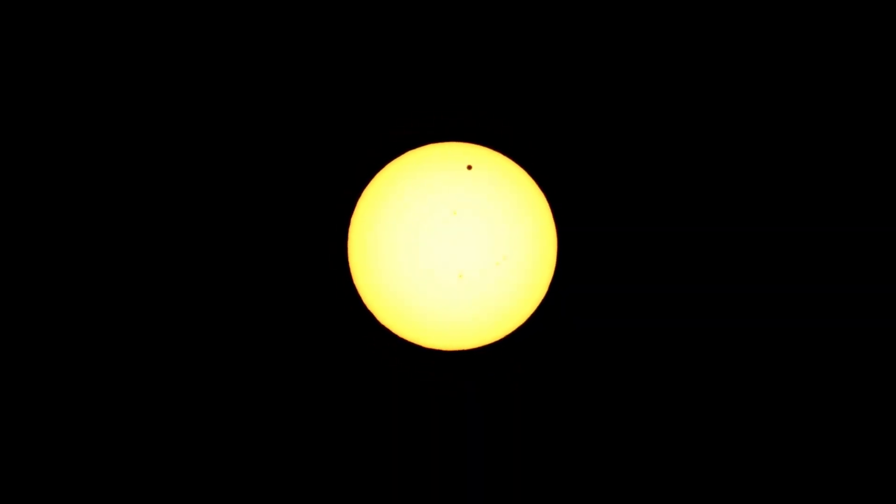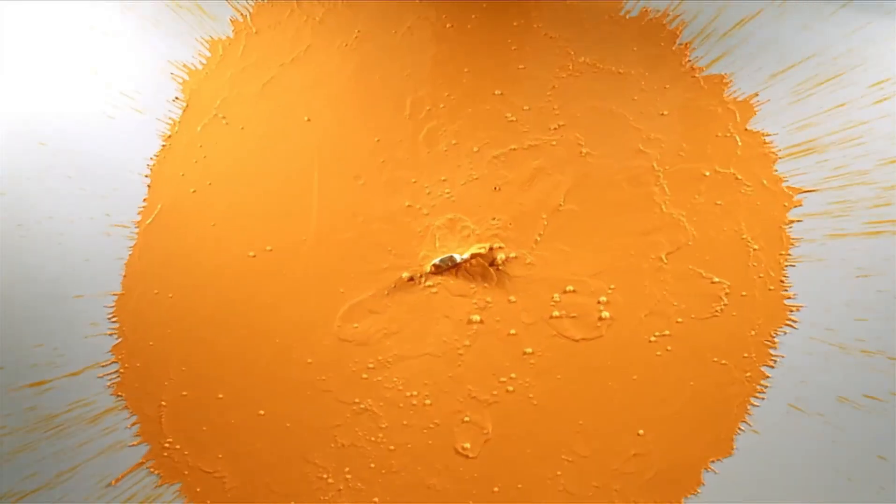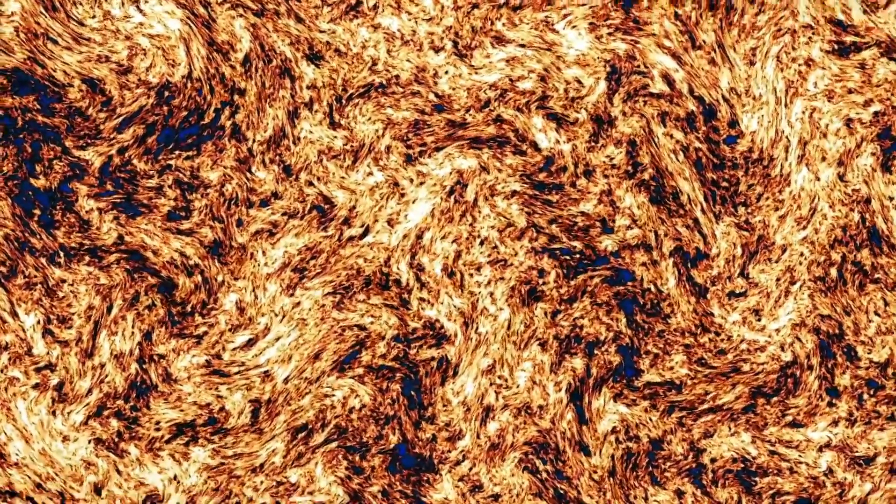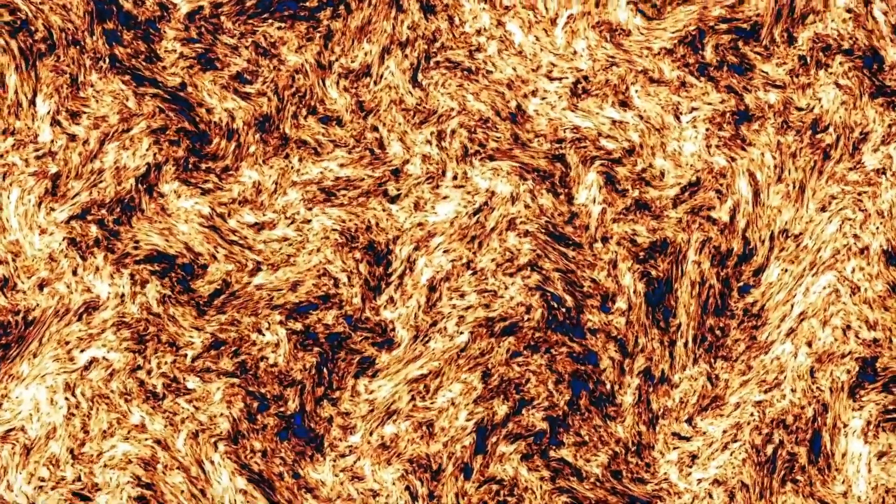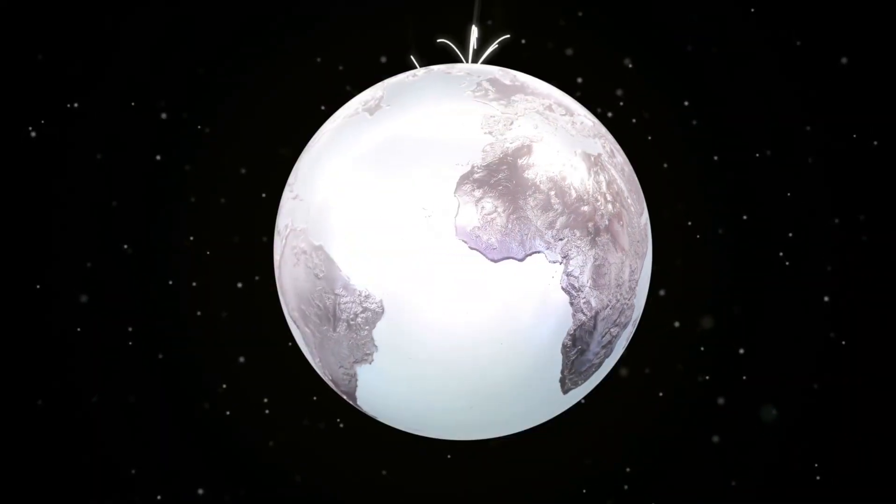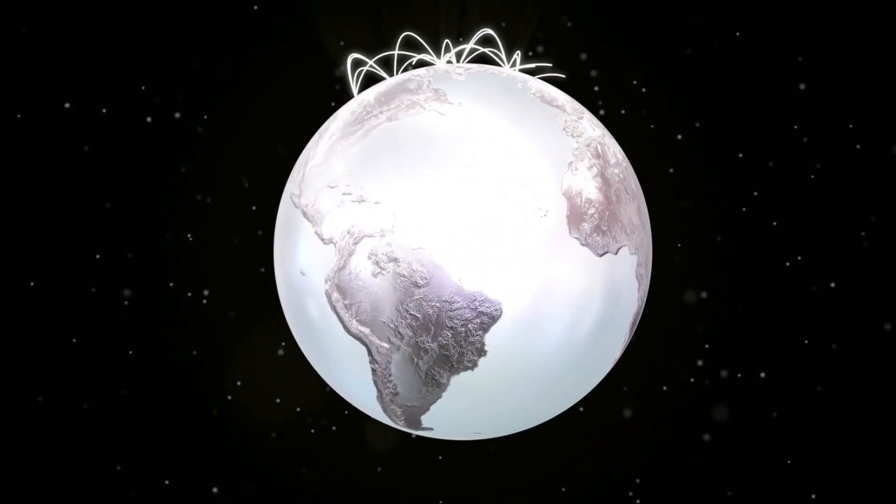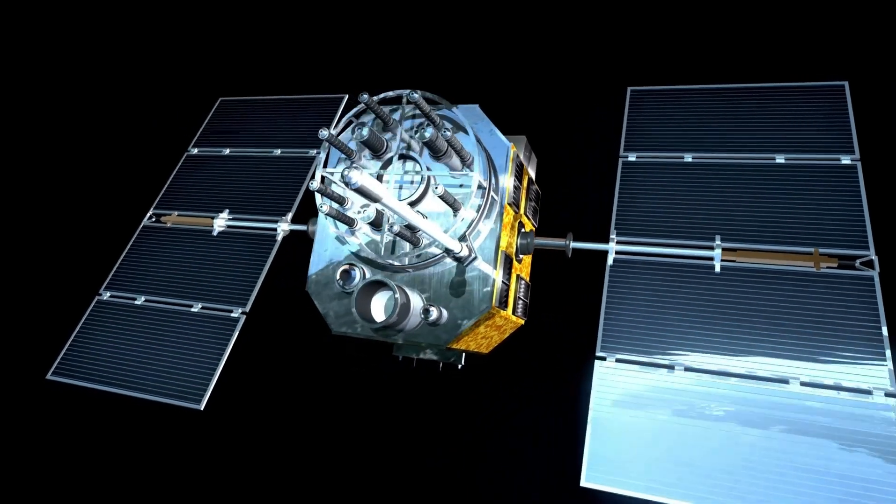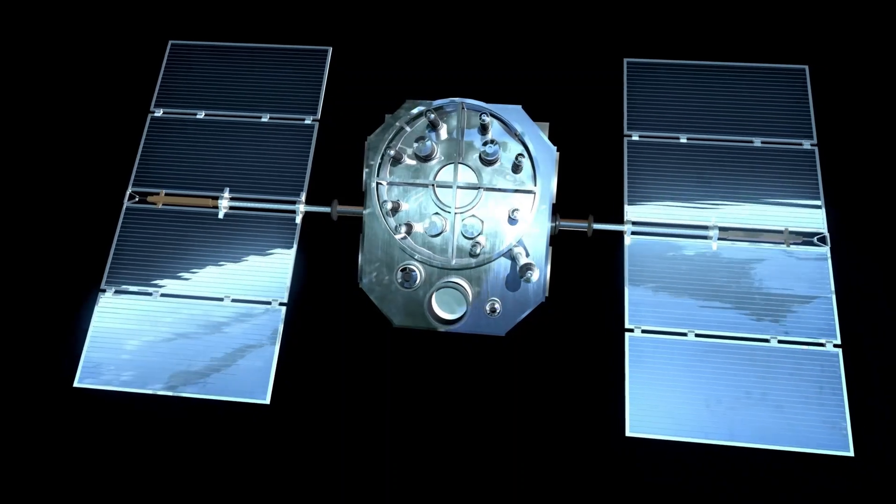The information provided by these spacecraft has deepened our understanding of the cosmos, revealing unexpected and sometimes baffling phenomena. The Sun, despite appearing as a tranquil sphere of light, is actually a dynamic nuclear engine hurtling through the Milky Way at an astonishing speed of 450,000 miles per hour. It is surrounded by an intricate web of tangled magnetic fields that continuously interact with the interstellar medium. As the Sun moves through the galaxy, it emits a constant stream of charged particles known as the solar wind, which does not simply dissipate into space but collides with the interstellar medium.